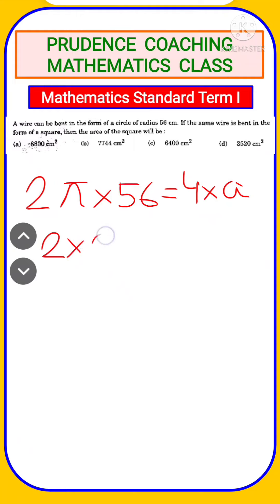Let's solve. We get 2 × 22/7 × 56 = 4a. Now, 7 × 8 = 56, so you can cancel this 4 and this 8.